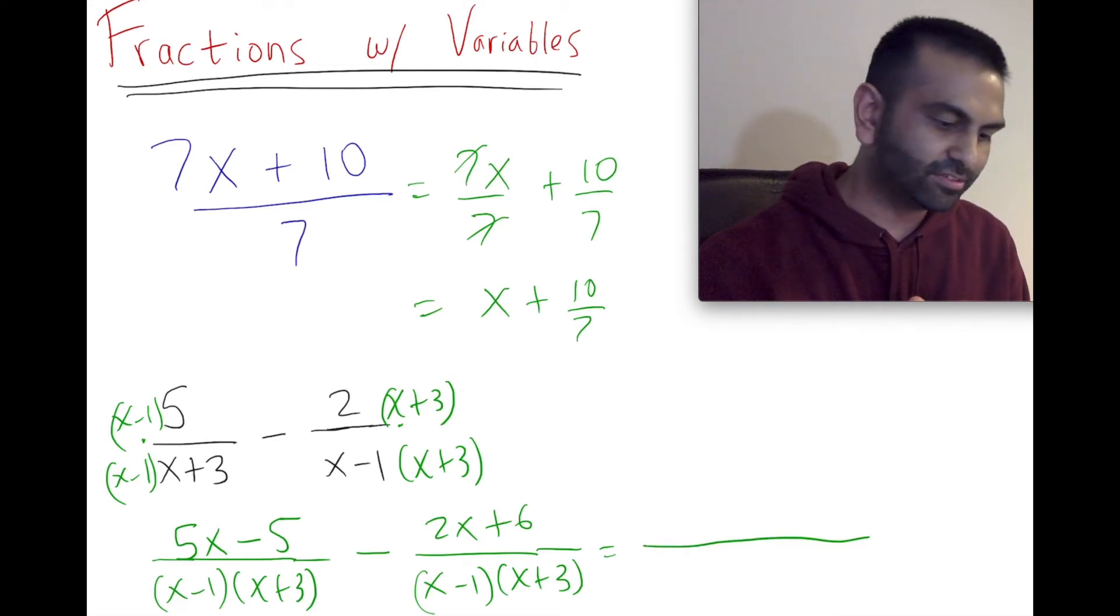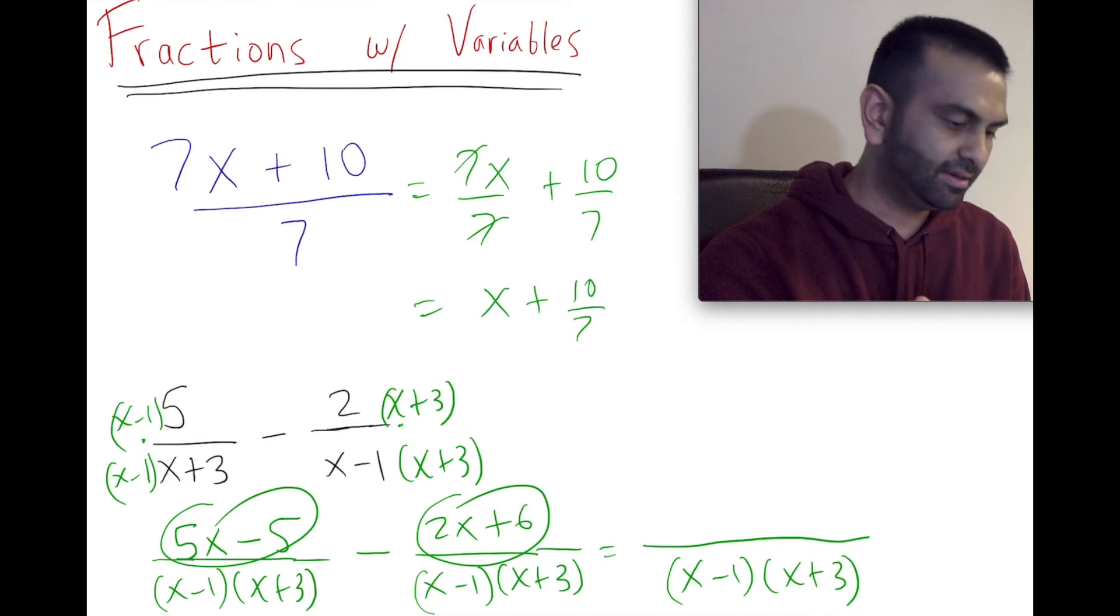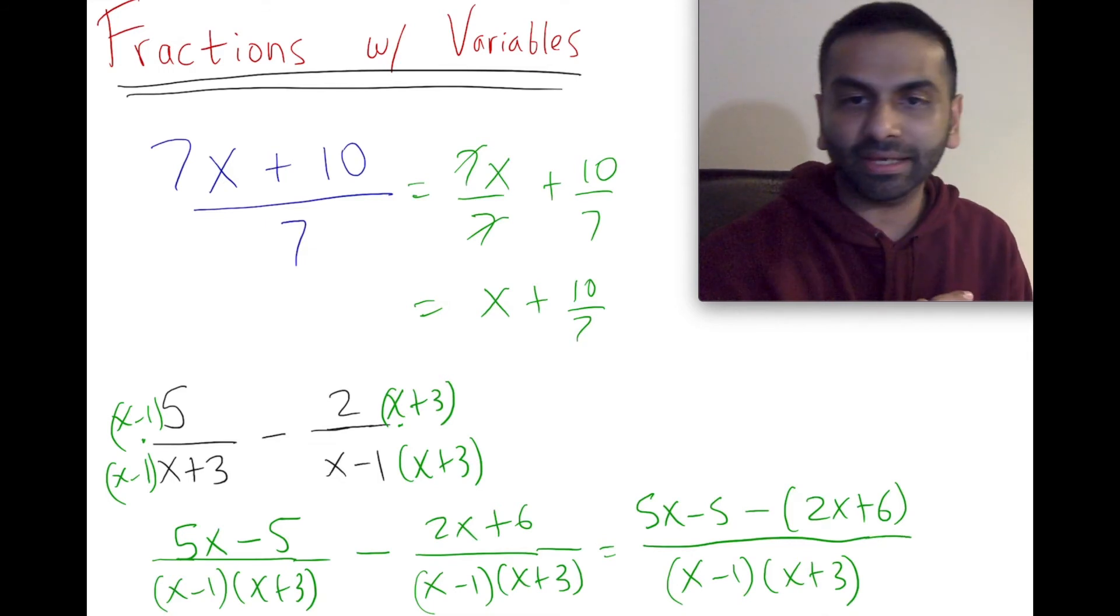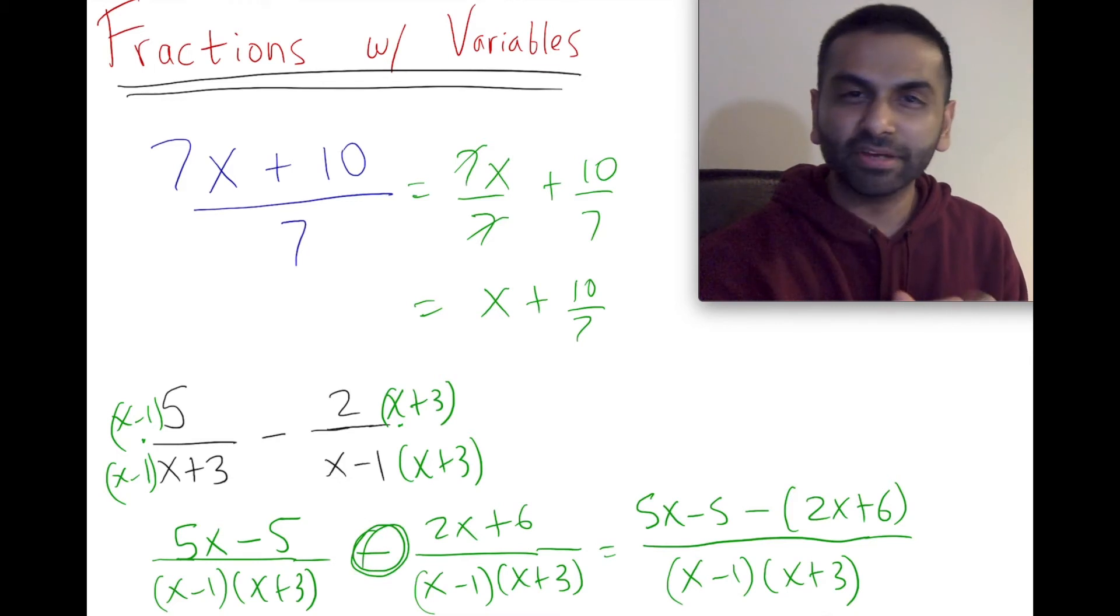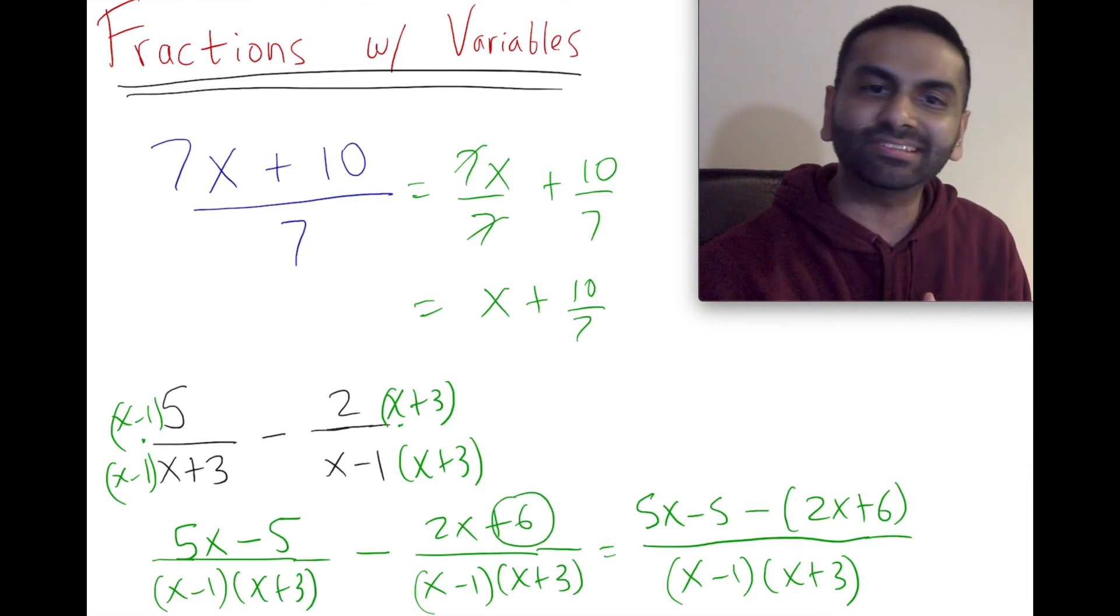So the new final fraction is going to have that same denominator, (x minus 1)(x plus 3). For the numerator, we do 5x minus 5 minus (2x plus 6). Notice a really common mistake people make here is they forget to distribute this negative. That negative applies to everything in the numerator, so technically when you distribute it out, it's negative 2x minus 6.